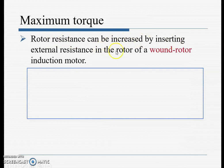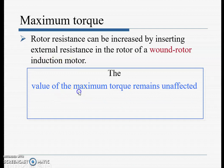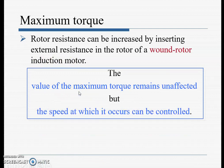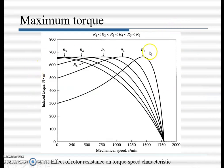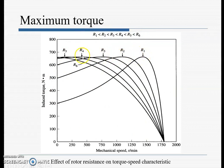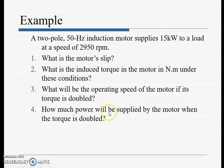Rotor resistance can be increased by inserting external resistance in the rotor of a wound-rotor induction motor. The value of the maximum torque remains unaffected, but the speed at which it occurs can be controlled. As resistance increases (R1 < R2 < R3 < R4), the torque-speed curve shifts, allowing the torque to be controlled.